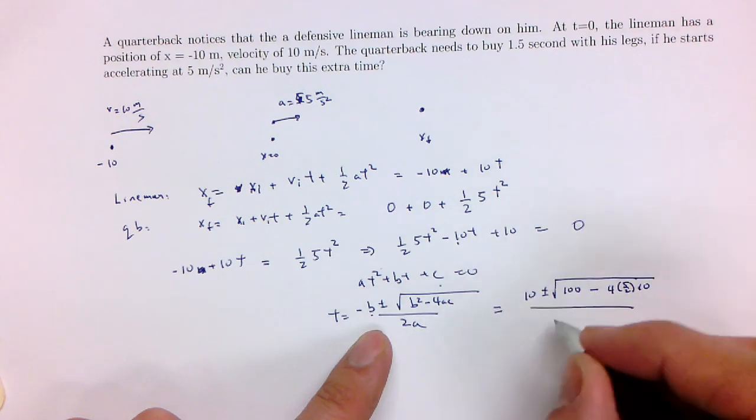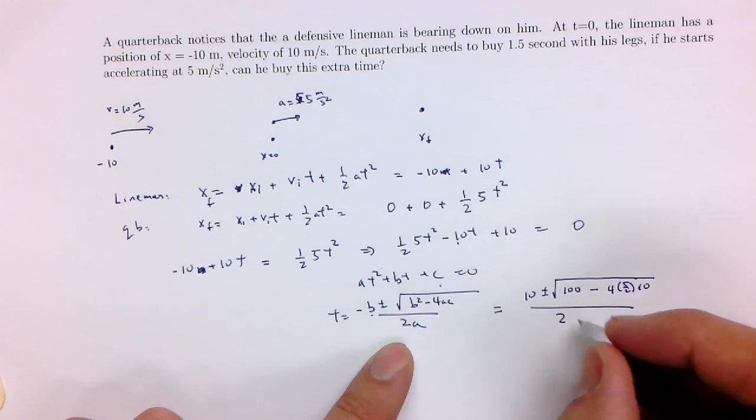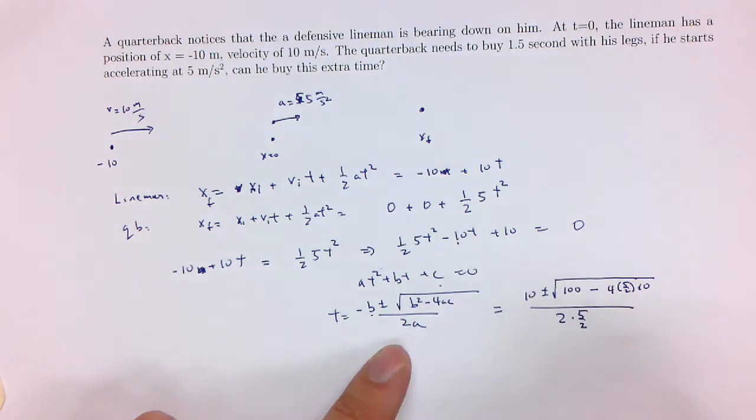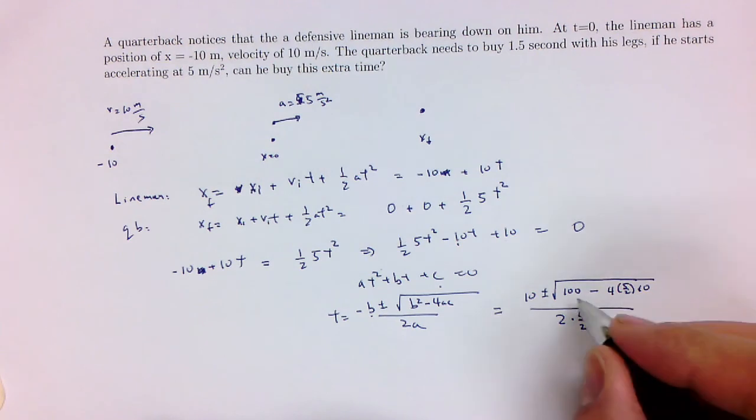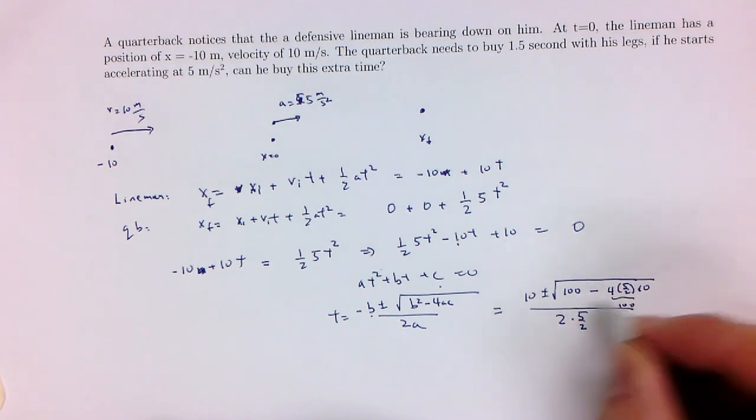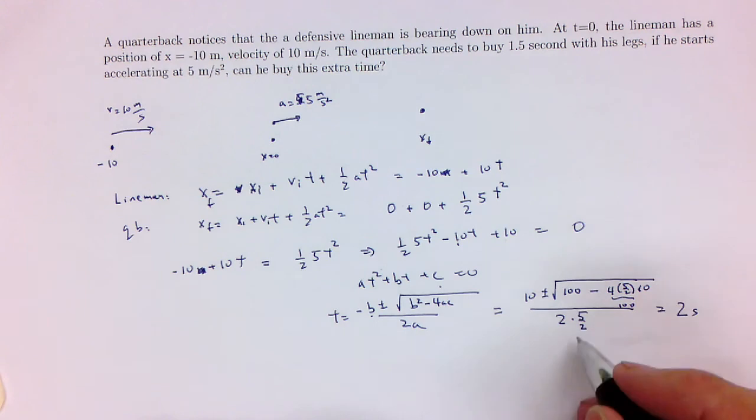Over 2a. a is going to be 5 over 2. So turns out when you solve this, this is going to be 100 again, and so this is going to be 0. So it's just equal to t equals 10 divided by 2a. 2 times 5 over 2 is 5, so 10 divided by 5 is 2 seconds.